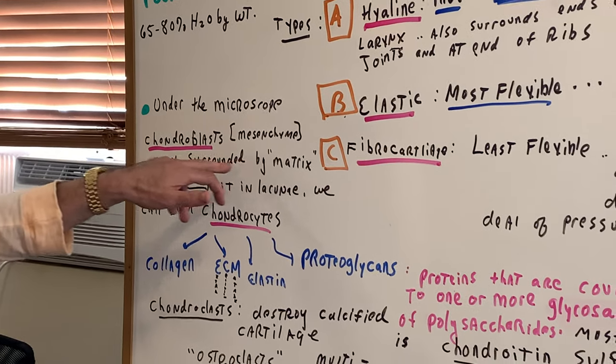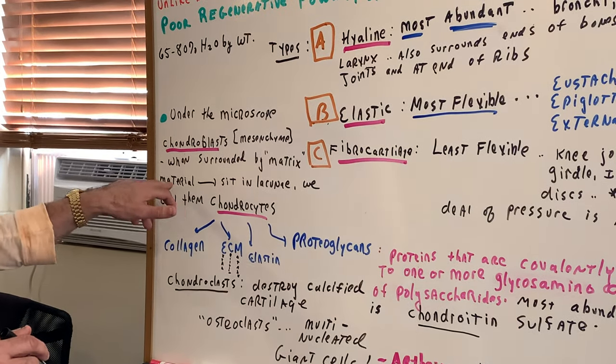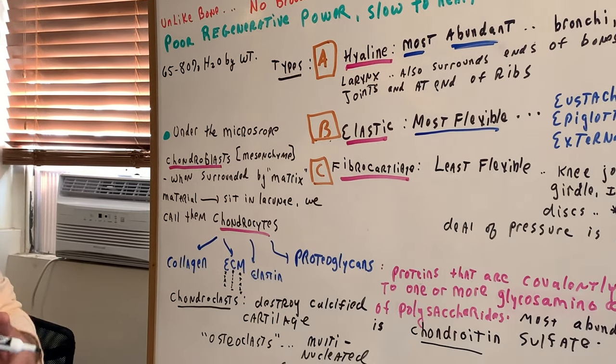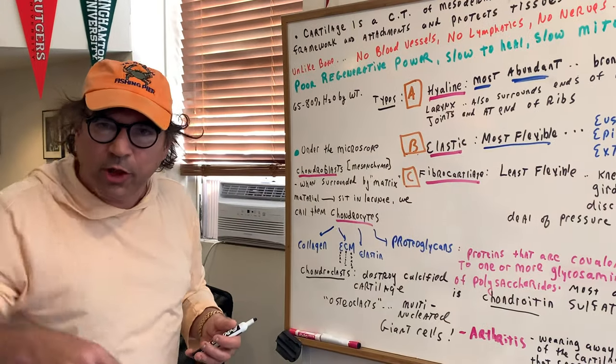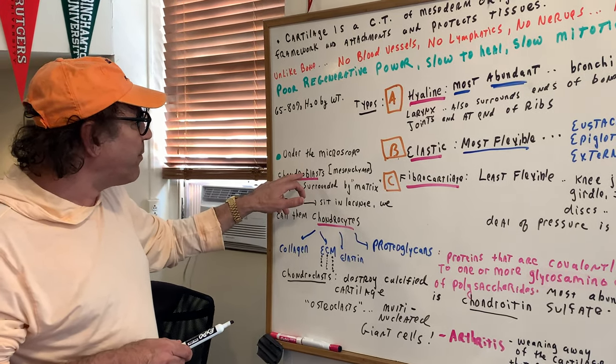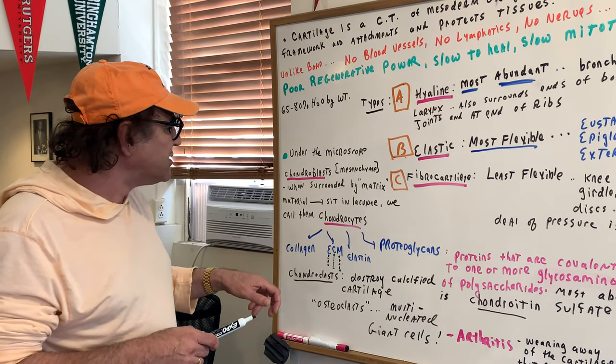Now, these chondroblasts, when surrounded by matrix material, sit in these little lacunae. You can't miss them. So, when you look at the microscope, they're all enclosed in, and when they're enclosed in, they've matured and differentiated from the chondroblast to the chondrocyte.